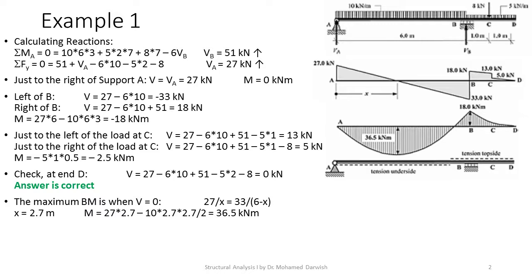In the British system of drawing bending moments — used in Egypt since it was a British-occupied country — the bending moment is always drawn on the tension side. Positive is drawn downward and negative upward, because the part in tension is on the bottom. This is especially important in reinforced concrete design, as it tells you where to place the steel bars. For shear force, positive is up and negative is down.